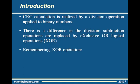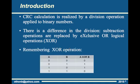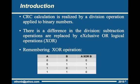The result of a XOR operation is 1 if one of the operands is 1 and the other is 0, in any order. In all other cases, the result is 0.